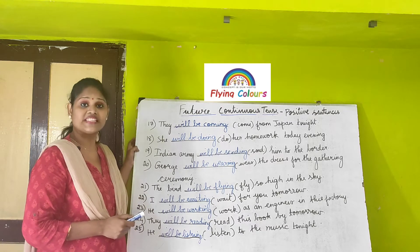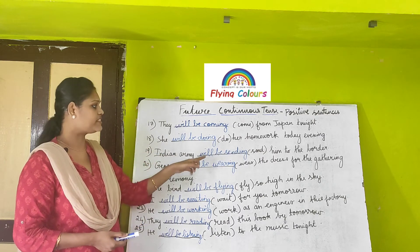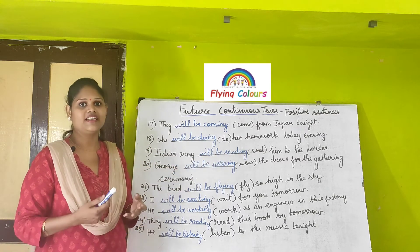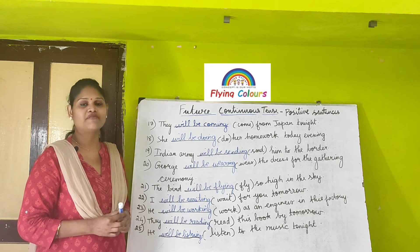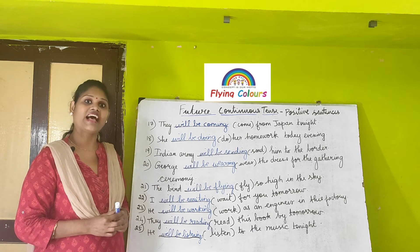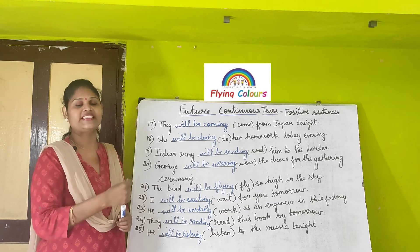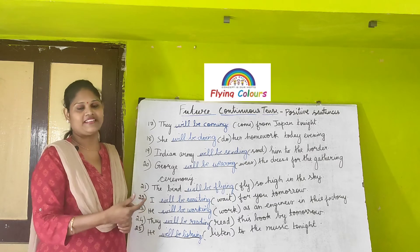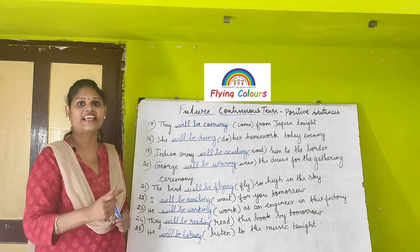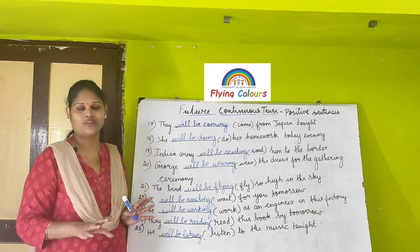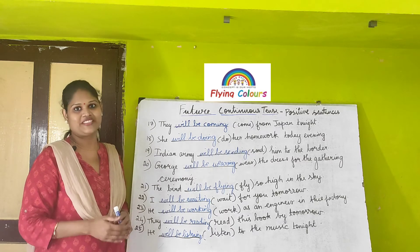Next: 'Indian Army will be sending him to the border.' Indian Army is the subject, plus will plus be plus 'sending' as the present participle. Then: 'George will be wearing the dress for the gathering ceremony.' George is the subject, plus will plus be plus 'wearing' — W-E-A-R-I-N-G — the present participle. Just add -ING to the main verb 'wear.' This is the formula for future continuous tense.